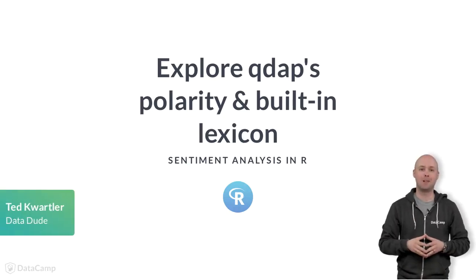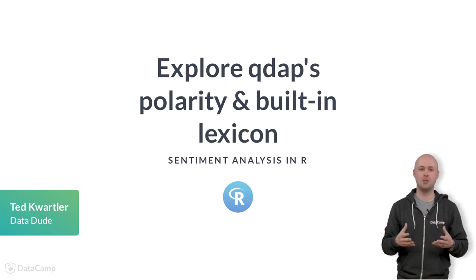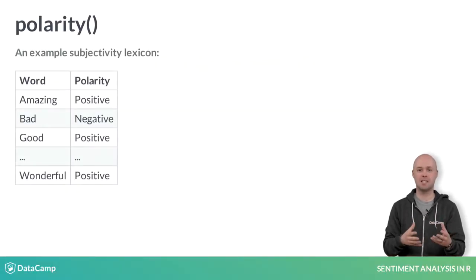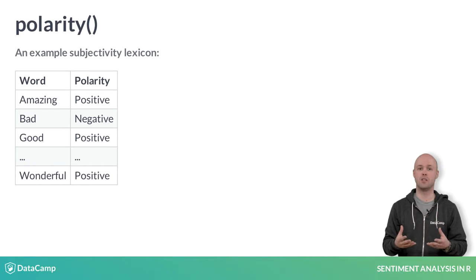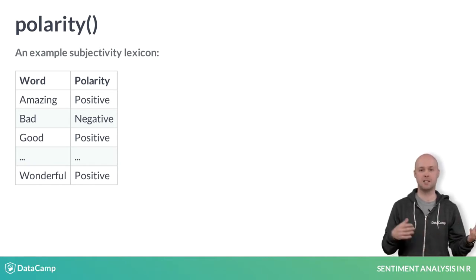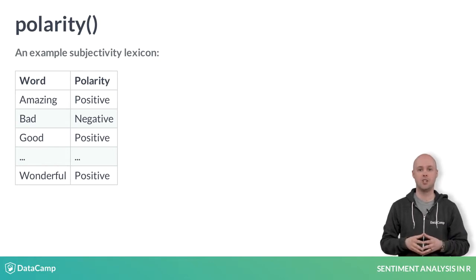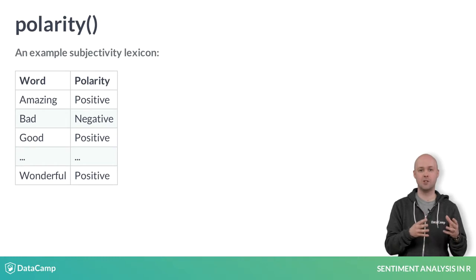In this chapter, you applied QDAP's polarity function a few times to get a quick positive or negative assessment. It turns out this function is more complex than you may think. First, there is a built-in subjectivity lexicon. This standard lexicon comes from two researchers from the University of Illinois at Chicago. It contains almost 7,000 words marked as positive or negative. You will learn how to change the lexicon, but let's first examine how it works without adding words.